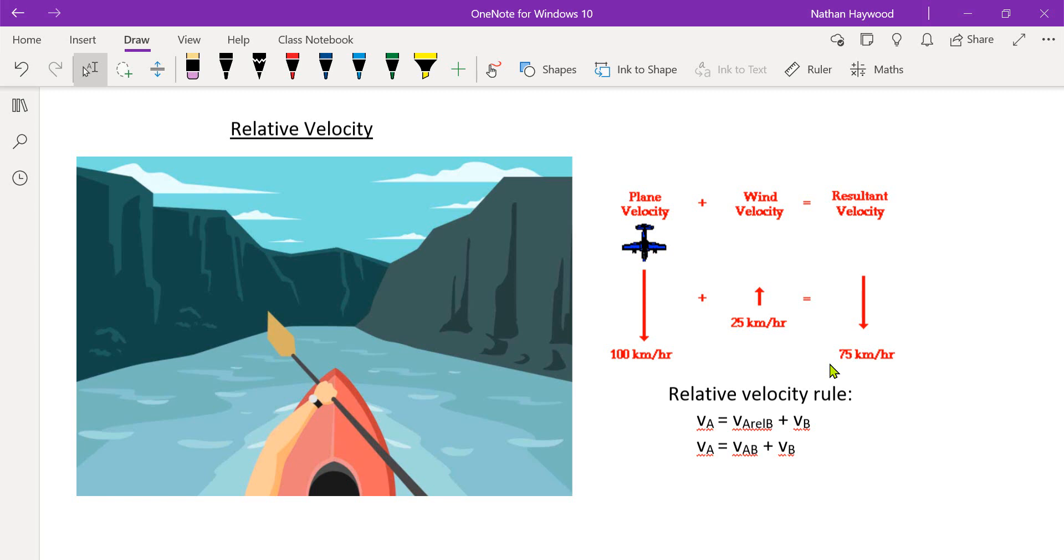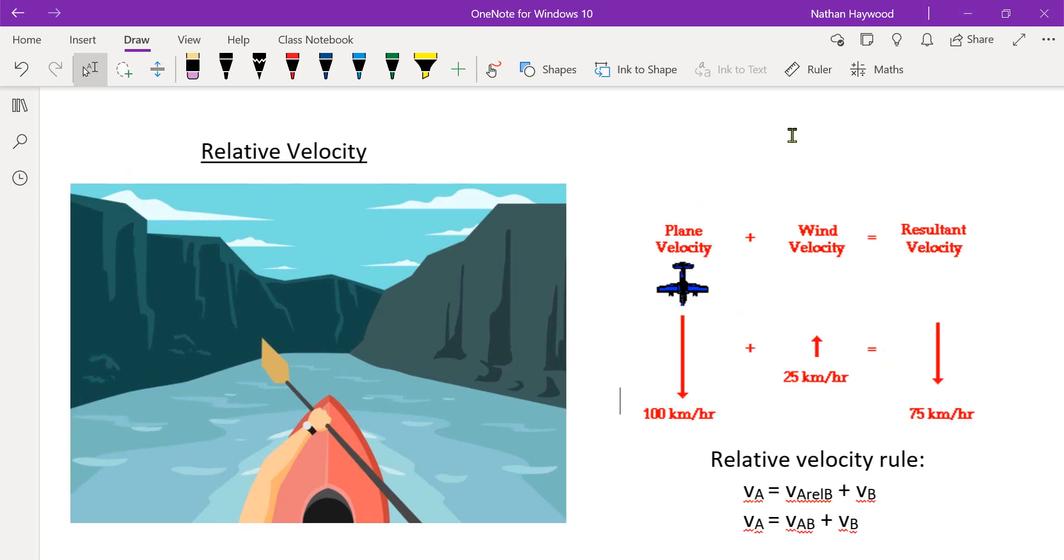So we're going to move on to relative velocity. If you're a guy in the river, canoeing down the river, and you're going like this and the river's pushing you that way, right? Your relative velocity is what you think you're going. But the actual velocity is that.